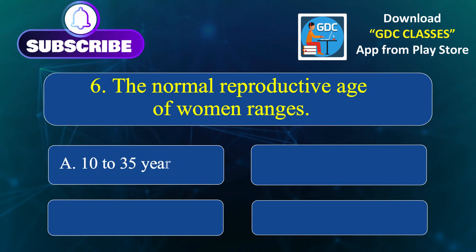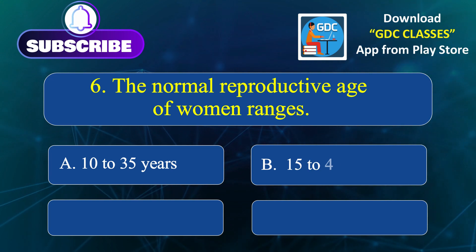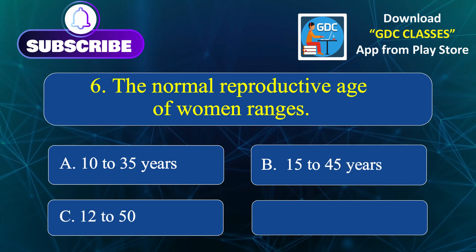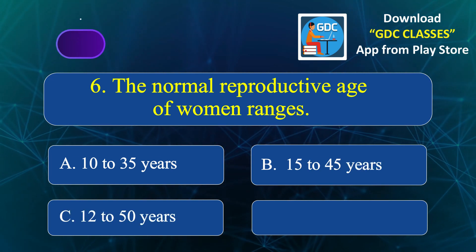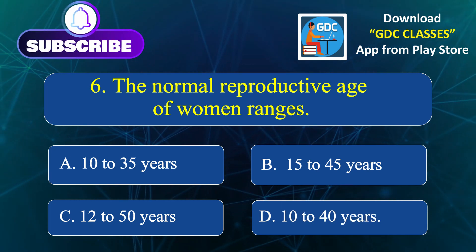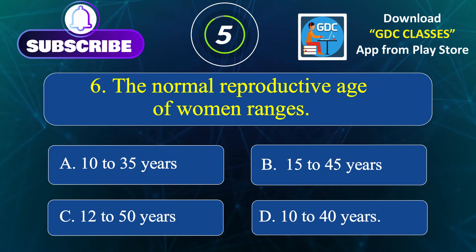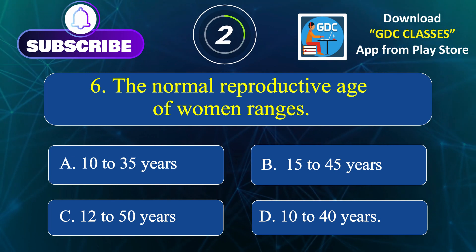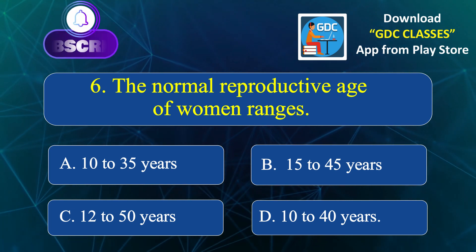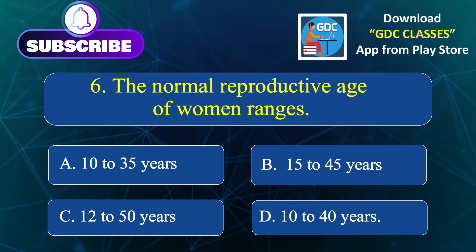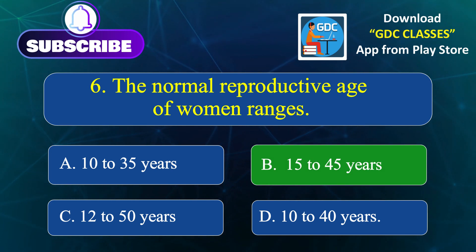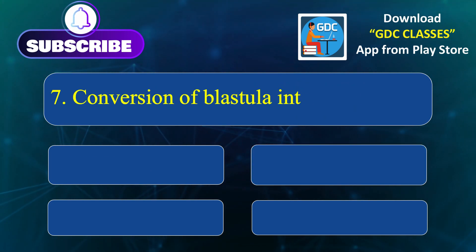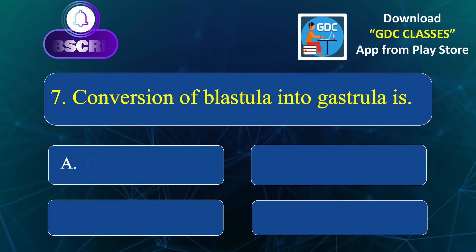The normal reproductive age of women ranges: Option A. 10 to 35 years, Option B. 15 to 45 years, Option C. 12 to 50 years, Option D. 10 to 40 years. Correct answer is Option B: 15 to 45 years.